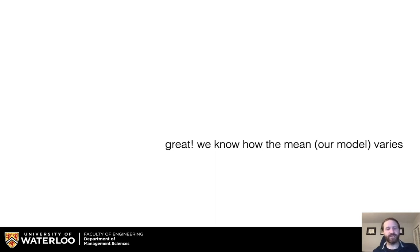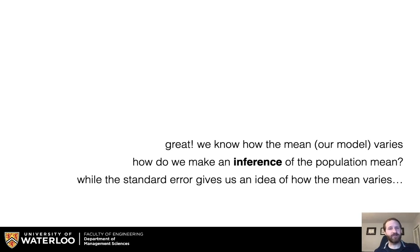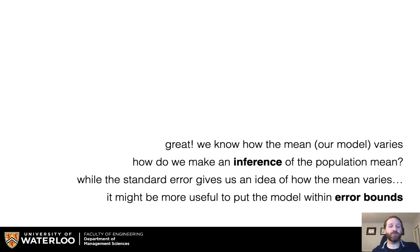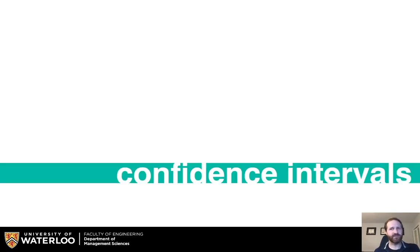Great! We know that the mean, our model, varies, so we have an idea of how well it fits the data. How do we make an inference of the population mean? While the standard error gives us an idea of how the mean varies, it might be more useful to put the model within error bounds, which leads us to confidence intervals.